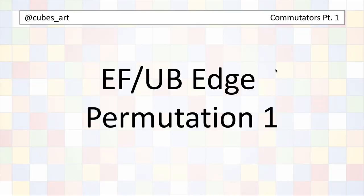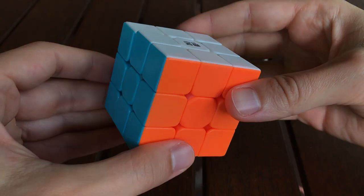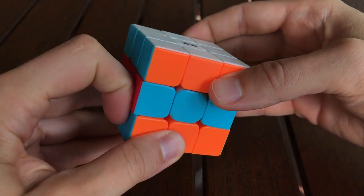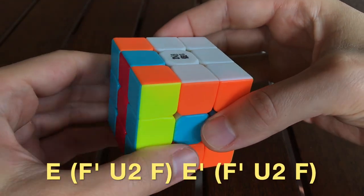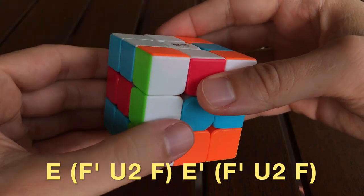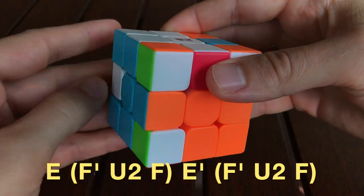Now let's put that sub-algorithm into a commutator. Begin by sliding the equator layer. Then apply the sub-algorithm. And undo the equator, E', and apply the sub-algorithm again.